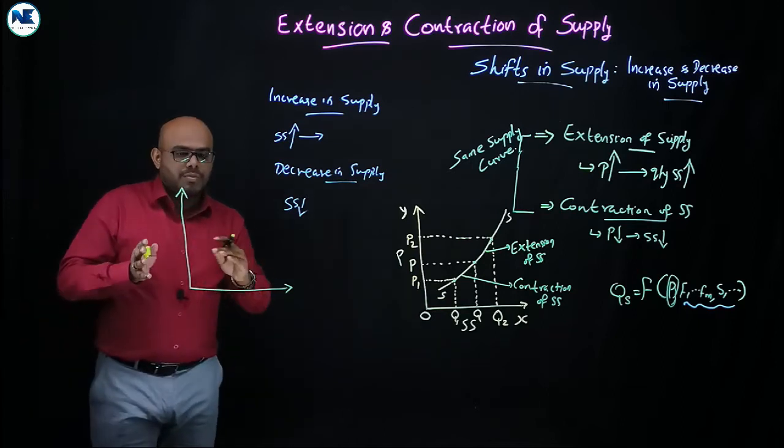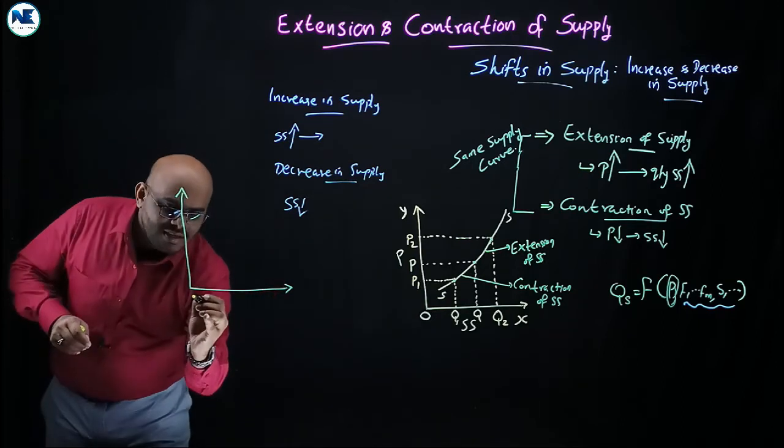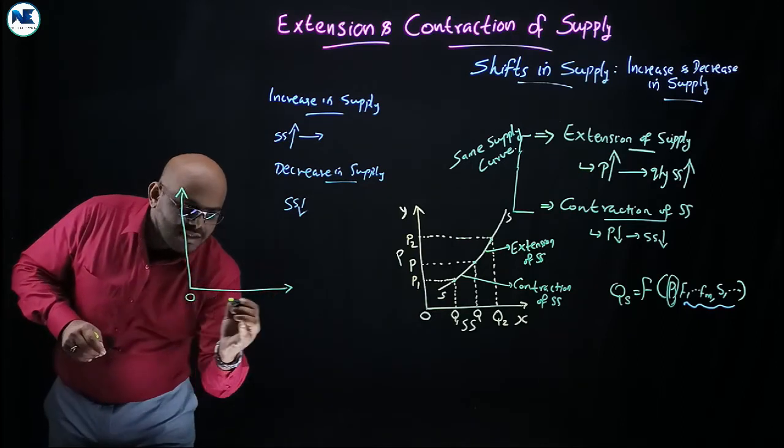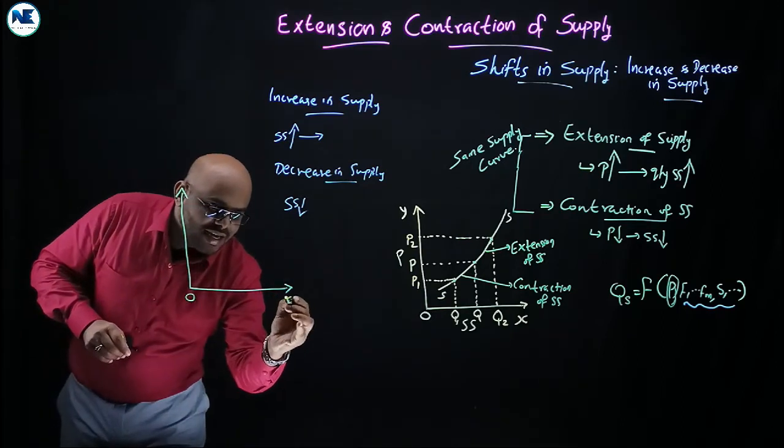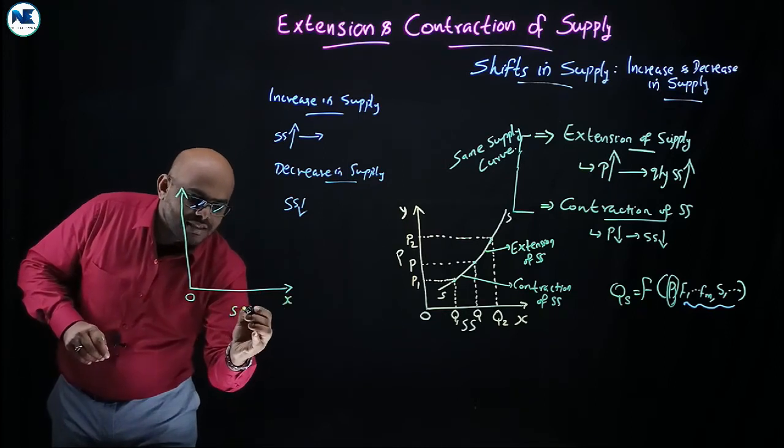This process happens in the form of a shift in supply. The X-axis represents quantity supplied and the Y-axis represents price.